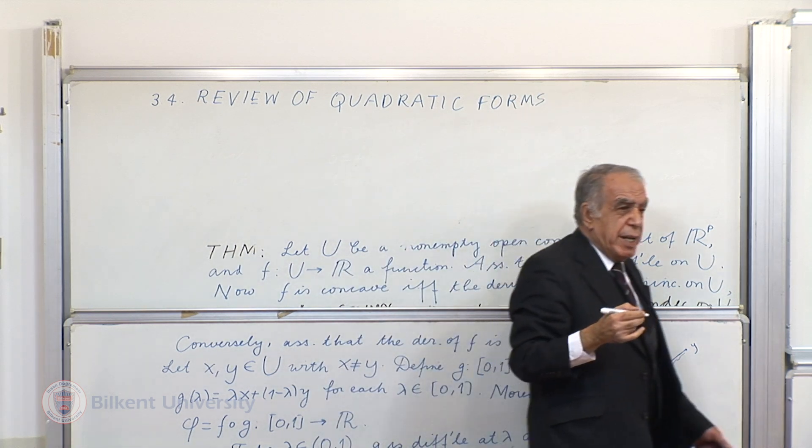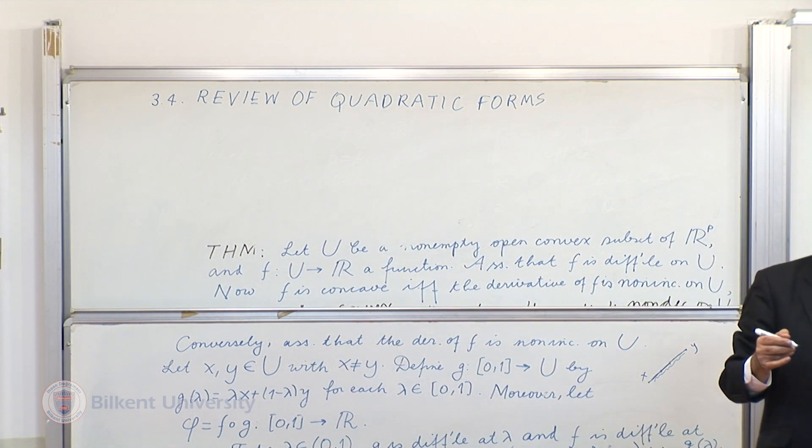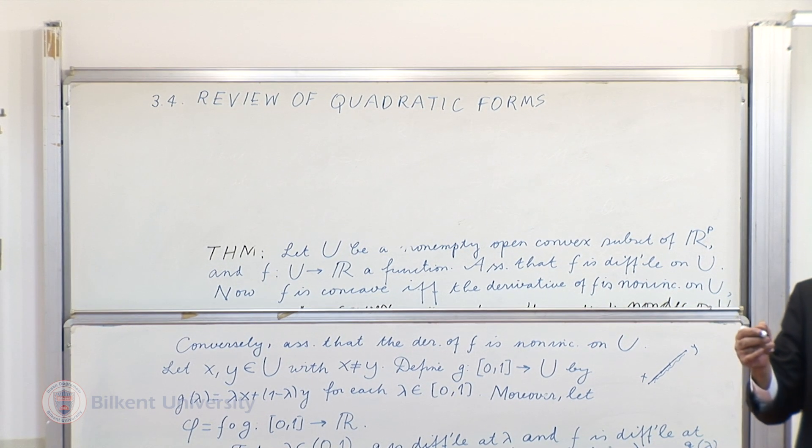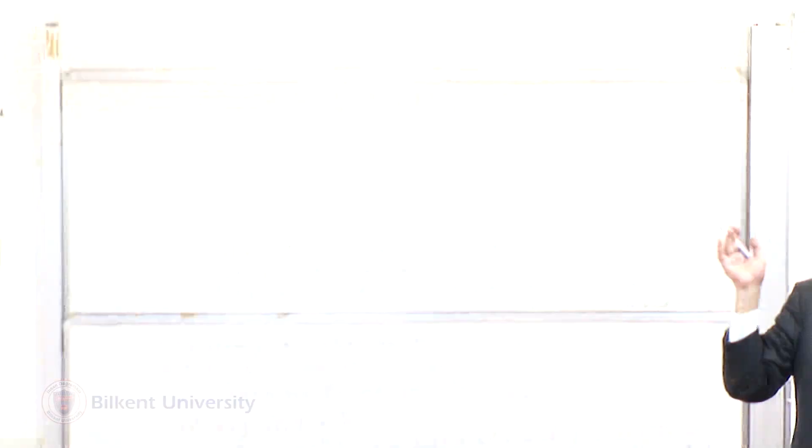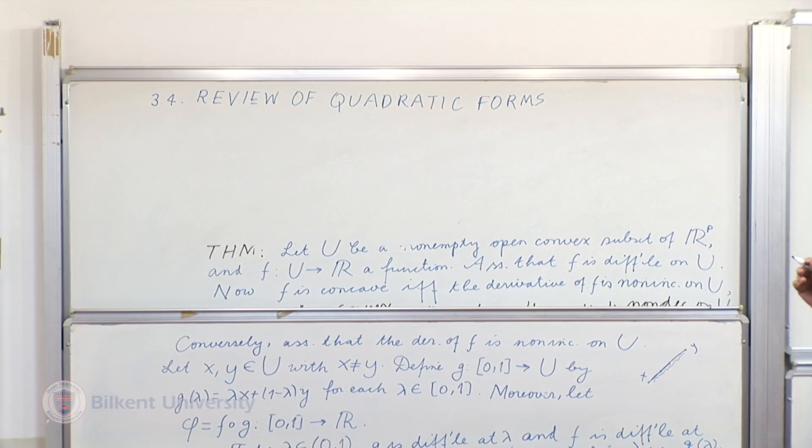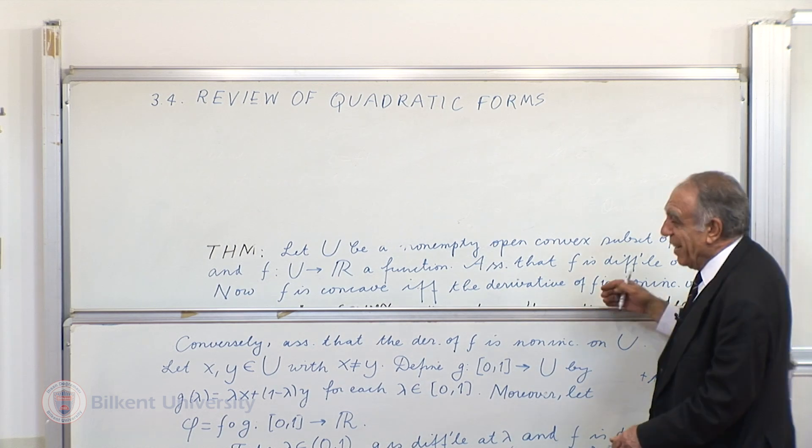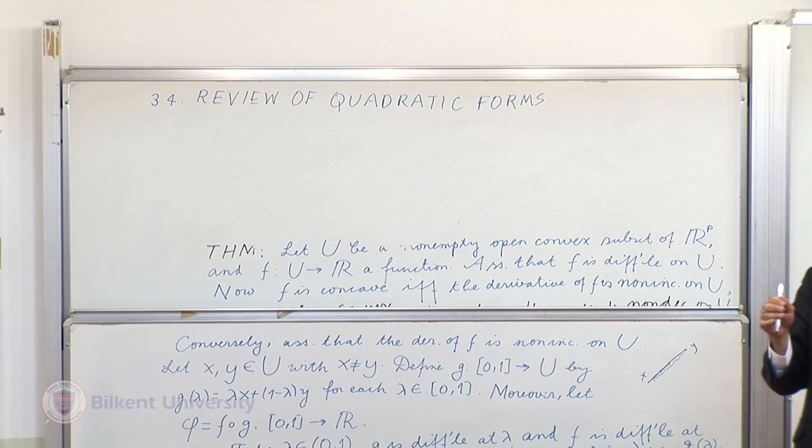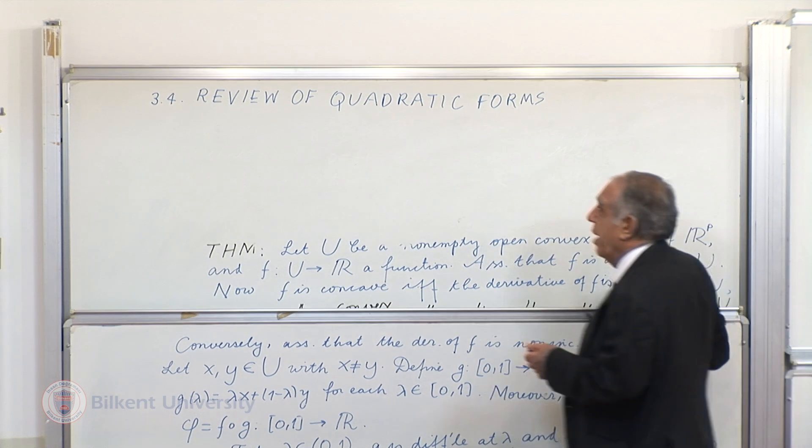You know what it means for a symmetric n by n matrix to be positive definite, negative definite. That's the quadratic form. It's the negative definiteness, positive definiteness and so on of a quadratic form.